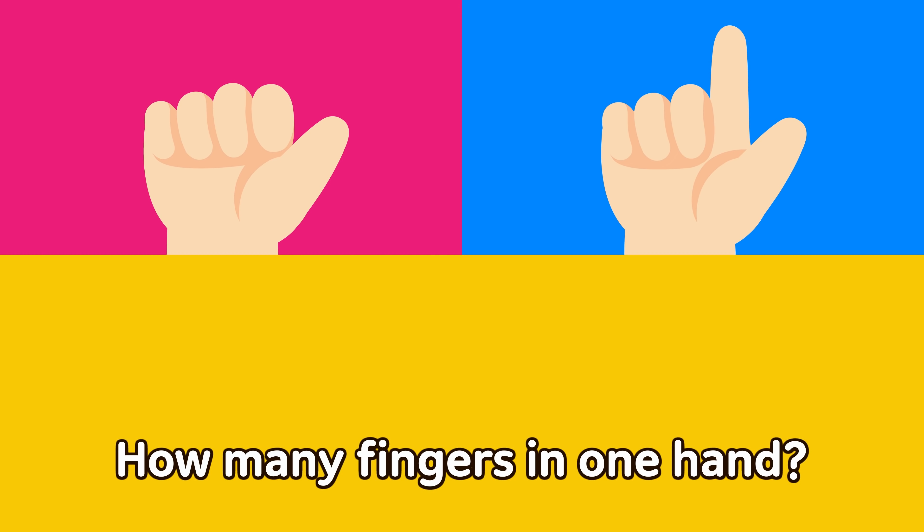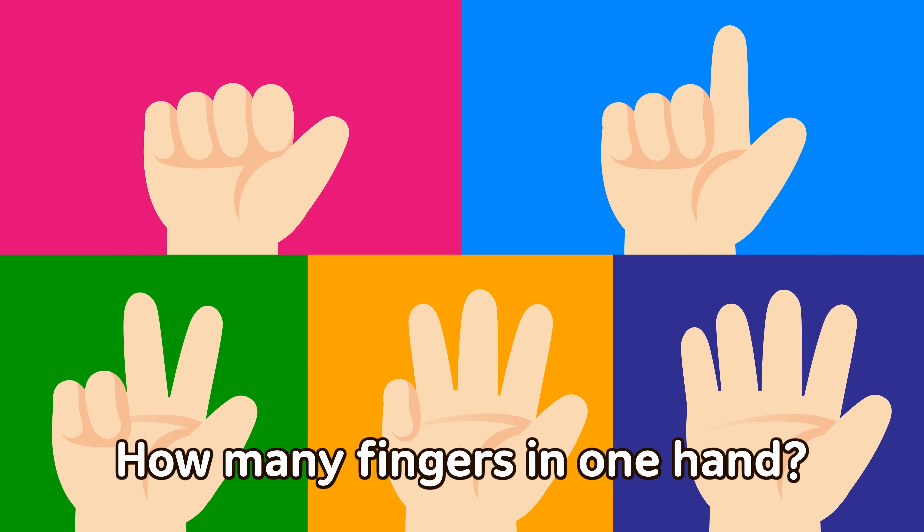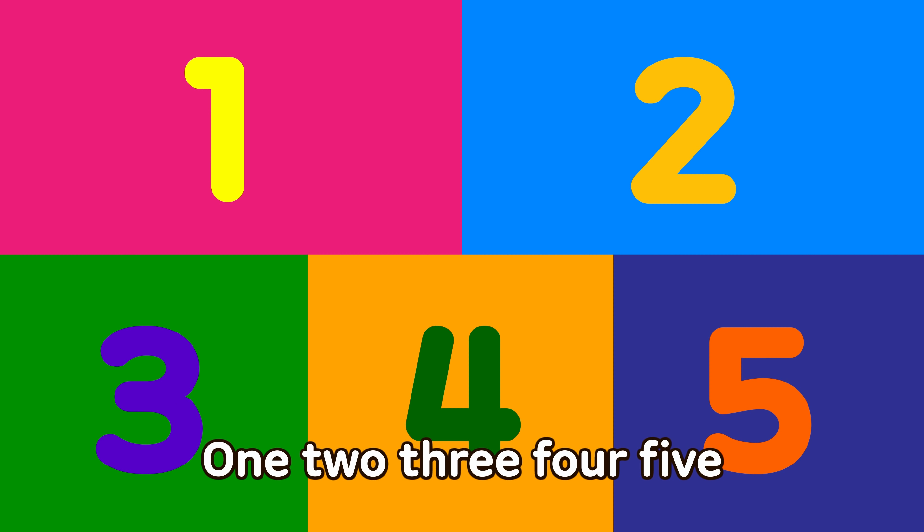How many fingers on one hand? 1, 2, 3, 4, 5.